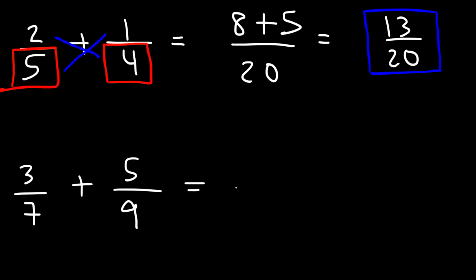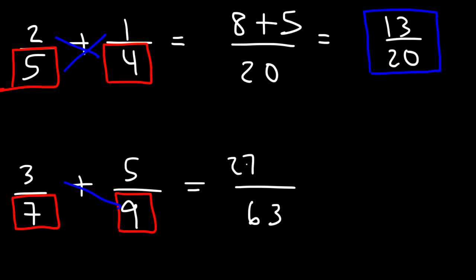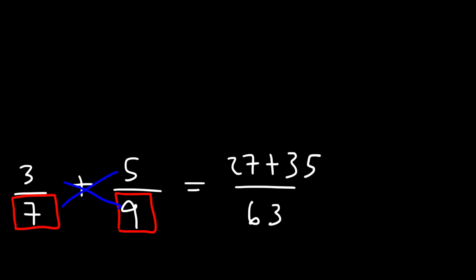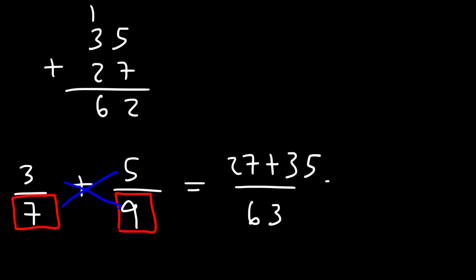Now let's try the next example: 3 over 7 plus 5 over 9. Let's multiply 7 by 9 — 7 times 9 is 63. Then cross multiply: 3 times 9 is 27, and 7 times 5 is 35. Now we need to add 27 and 35. Let's do it the old-fashioned way: 5 plus 7 is 12, write the 2 and carry the 1, then 3 plus 2 plus 1 is 6. So 27 plus 35 is 62, and the final answer is 62 over 63.